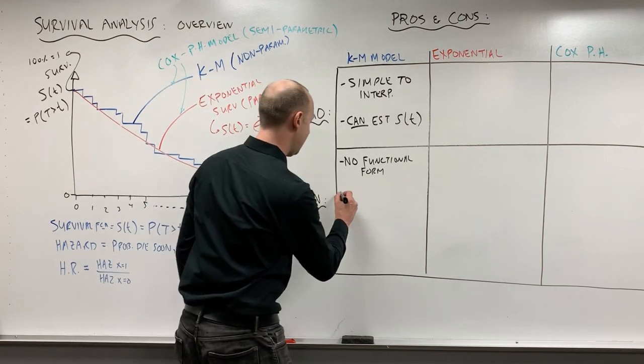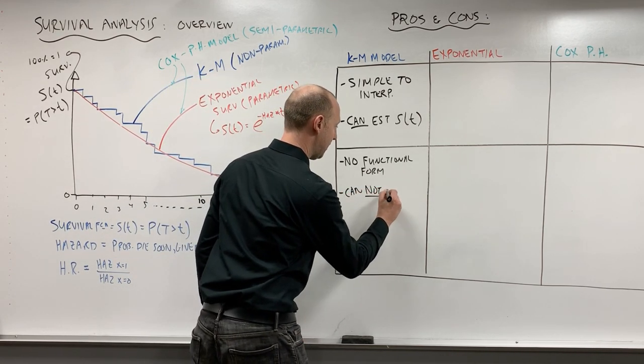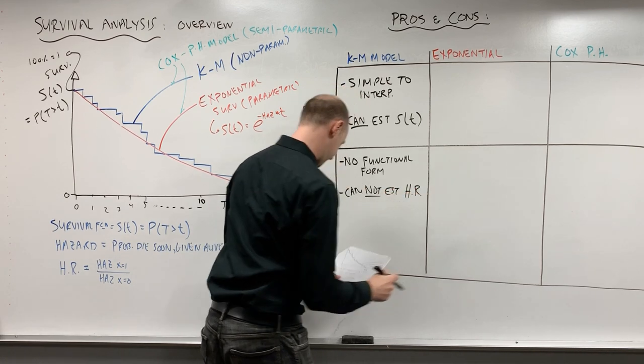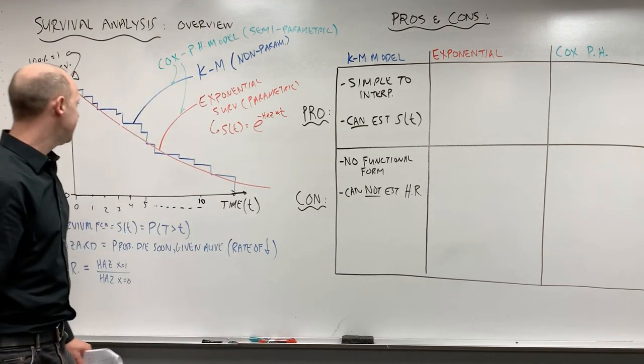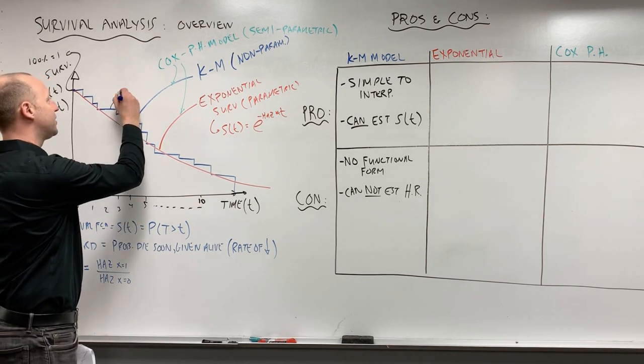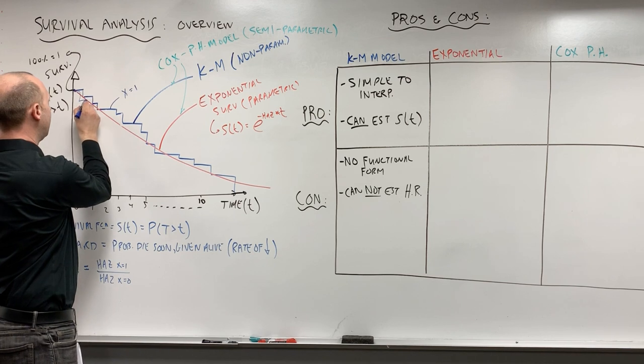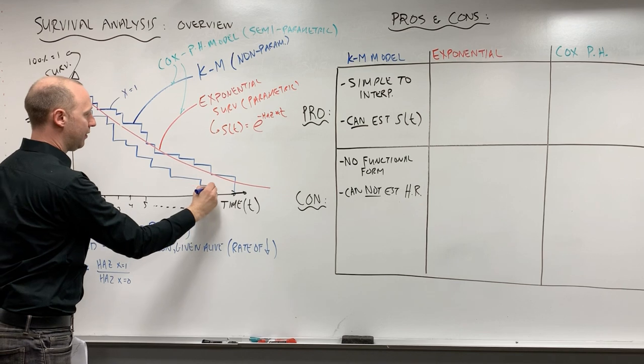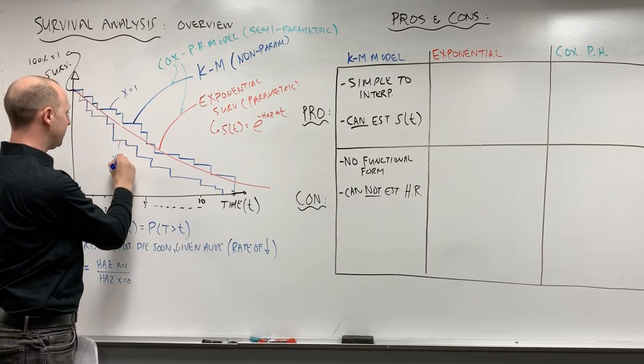Another con is you cannot estimate a hazard ratio. And let me try and explain why that is. Let's suppose we want to compare survival of two groups - this is the exposed group, or x equals 1.